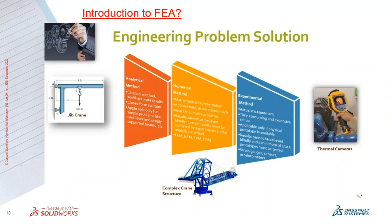This is the concept of the basic engineering problem. When you design a product, designers typically use the analytical method, which gives 100% accurate results but only for very simple problems — like calculating reaction forces, loads, and bending moment of a jib crane. Coming to the numerical method, it involves a lot of formulas and is used for complex components, complex assemblies, or complex structures. In this case we use FEM — a computer tool which processes all these results, requiring some approximations and assumptions.